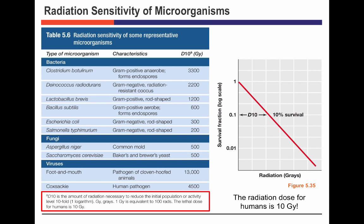The unit of radiation is the gray; one gray equals 100 rads. A lethal exposure of radiation to humans is 10 grays — 10 grays ablates the hematopoietic system, preventing neutrophil production, causing death within two weeks. By comparison, Clostridium botulinum resists 3,300 grays and its spores are extremely resistant. E. coli has a 300 gray radiation limit — the radiation that kills us won't harm E. coli. The foot-and-mouth virus requires 13,000 grays to be eliminated from solution.